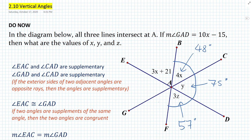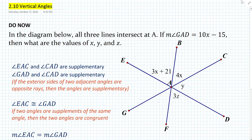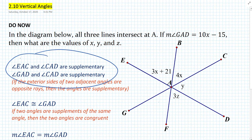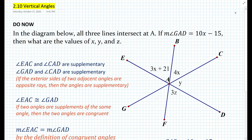Now, the reason we have this is because we can actually simplify things by using vertical angles instead of doing all this work. The do now kind of showed that this is always true — that vertical angles are actually congruent. We said that these two angles are both supplements of the same angle, and we ended up stating that angle EAC and GAD are congruent. Well, what kind of angles are these?